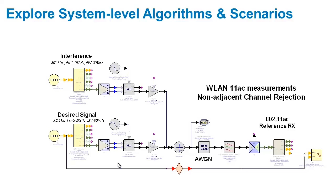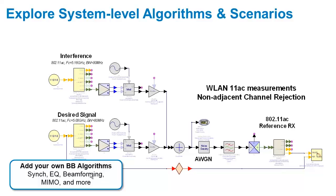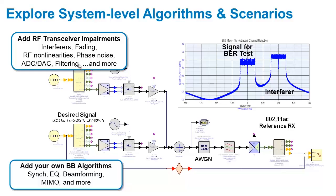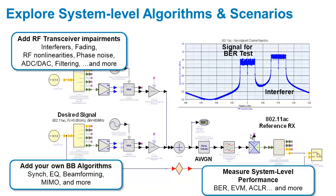Here in this scenario, I'm looking at the effect of an interferer on the overall system coded bit error rate with error correction turned on. I can add my algorithms for synchronization, equalization, and beamforming. I can also add RF impairments such as phase noise, RF nonlinearities, the effects of A-to-D and D-to-A converters, and filtering. At the end, I'm able to measure constellations, EVM, bit error rate, and the total performance of this physical layer communications design.